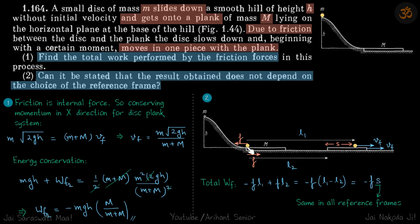Because displacement of the ball and the frictional force are in opposite directions. So that is the work done by the friction on the ball. And work done by friction on the plank is F into l2. This much.